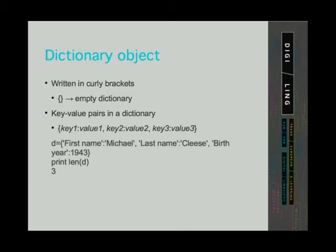Now we can take a look at some code. Let's name a variable d and associate with this variable a dictionary with three elements as seen on the slide. On dictionaries, we can use the len function to count how many elements are in a dictionary. For our dictionary, len will return three.